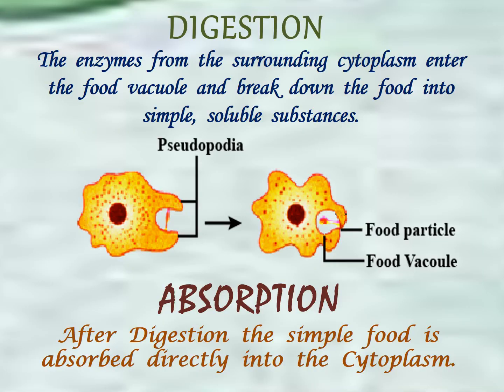The next step is digestion. The enzymes from the surrounding cytoplasm enter the food vacuole and break down the food into simple soluble substances. You can see in the diagram also. The next step is absorption. After digestion, the simple food is absorbed directly into the cytoplasm.